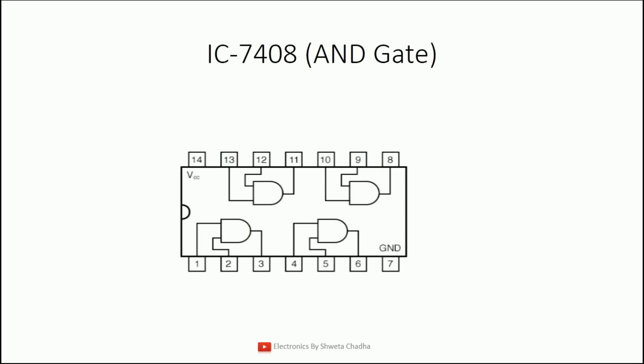The AND gate IC consists of total 14 pins. This portion is known as the notch. We always start counting the pin numbers from the notch. Just below the notch: pin number 1, 2, 3, 4, 5, 6, 7, then we follow the anti-clockwise direction: 8, 9, 10, 11, 12, 13, and 14. All ICs must have an even number of pins.